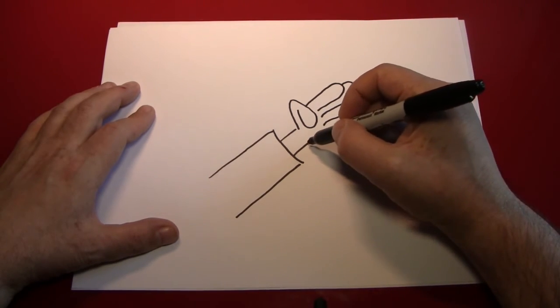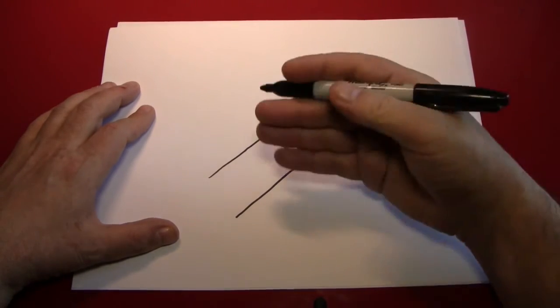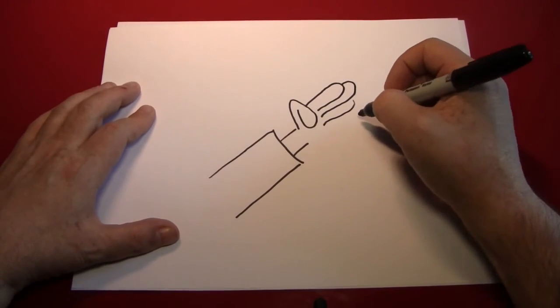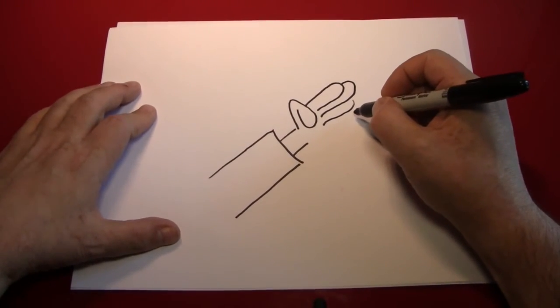Now you could simply make a curved line right now for the palm of the hand and be done with it. A lot of cartoon hands have only four fingers, but I like to make a fifth. I like that pinky.